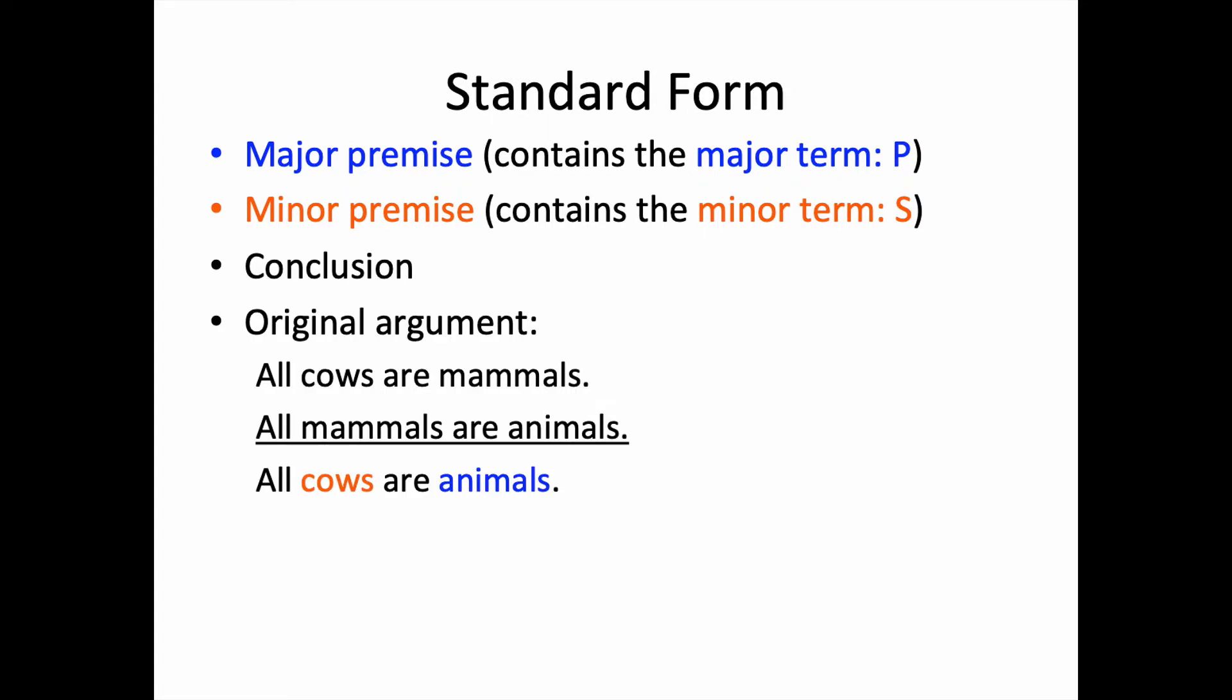So, let's return to our original argument. All cows are mammals, all mammals are animals, so all cows are animals. We see that the major term is the conclusion's predicate. The minor term is the conclusion's subject. The predicate term P and the subject term S will tell us how to order the argument's elements, that is, in this case, how we order the premises.